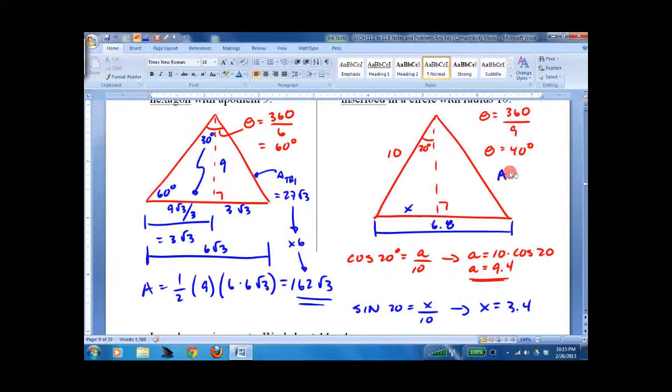So area equals one half, 9.4, 9 sides times 6.8. 287.6. Very complicated stuff.